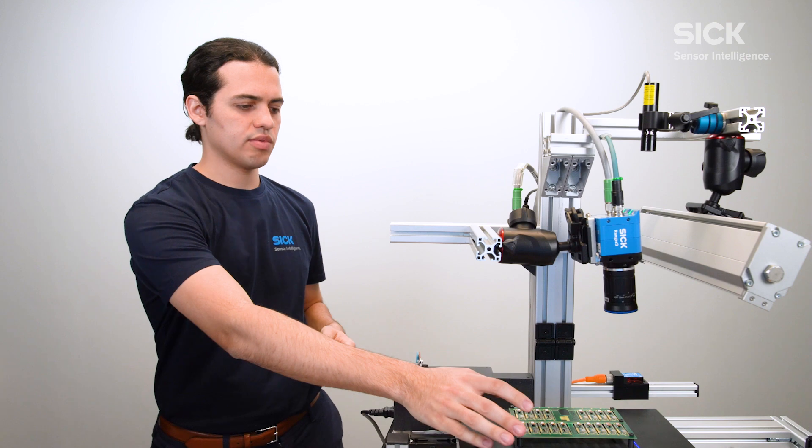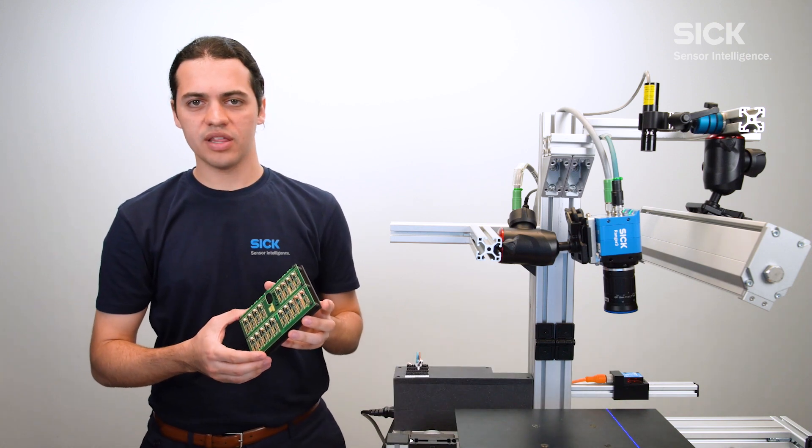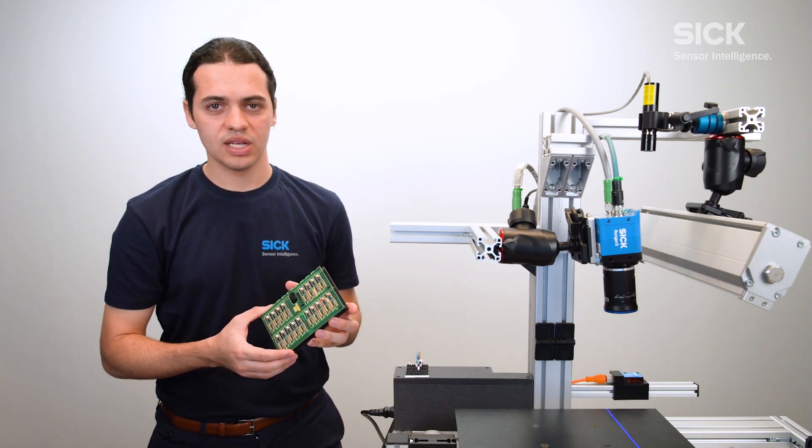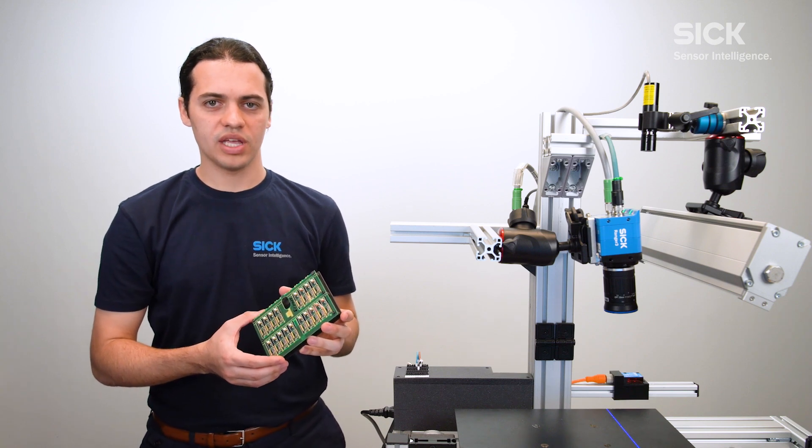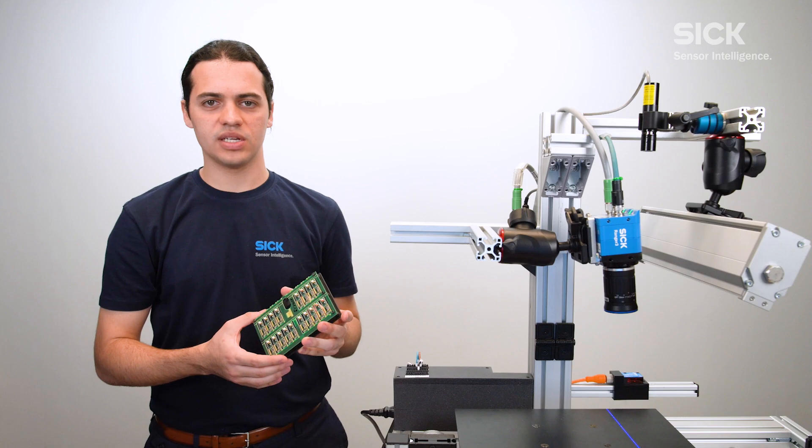The object that we will inspect is a PCB board and the goal is to get 3D data for volume measurements while at the same time capturing a high-resolution color image where we can inspect the color of the components and also some finer details.